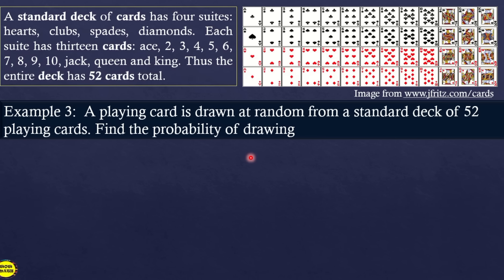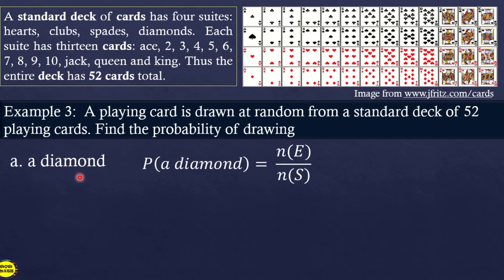A playing card is drawn at random from a standard deck of 52 cards. Find the probability of drawing a diamond. There are 4 suits, each with 13 cards, so there are 13 diamond cards. The sample space is 52. Therefore, probability = 13 over 52, which simplifies to 1/4.